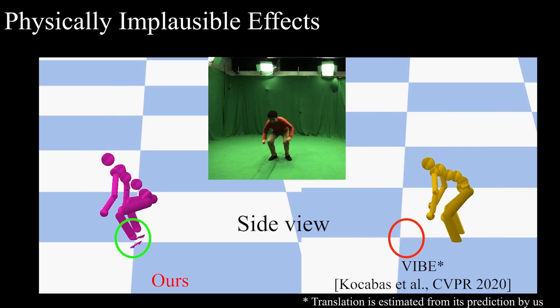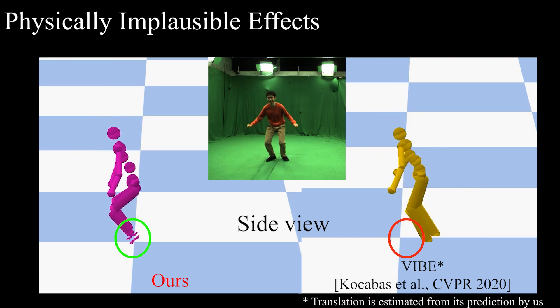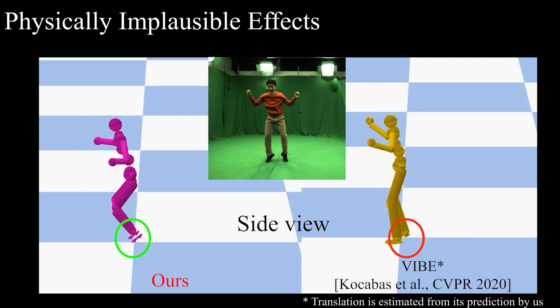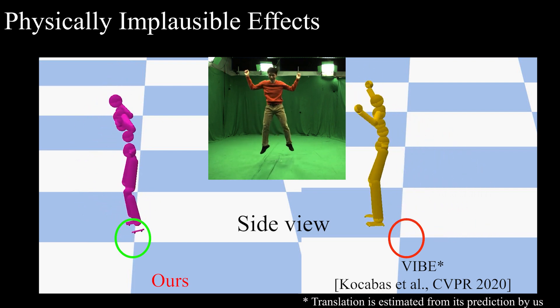Here, we visualize the reconstructed 3D motions from a side view and mark the starting foot-floor contact positions for jumping. Compared to the state of the art, our results show significantly fewer artifacts, such as foot-floor penetration and unnatural variations along the depth channel with respect to the input view displayed on top middle.